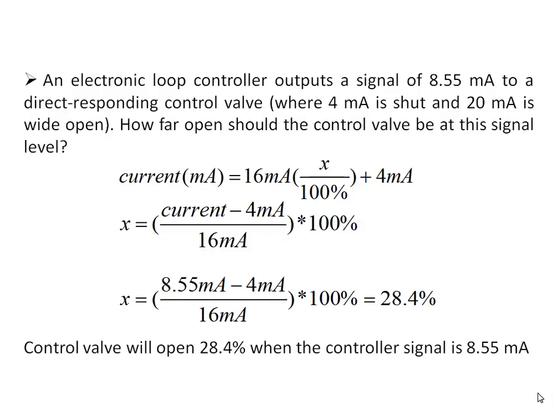Consider this example: an electronic loop controller outputs a signal of 8.55 mA to a direct-responding control valve, where 4 mA means the valve is completely shut and 20 mA means it is completely open. How far is the valve open for a signal of 8.55 mA? Using the equation — current = 16 mA × percentage variable + 4 mA — and substituting 8.55 mA, we get a manipulating variable of approximately 28.4%. So the control valve will open 28.4% when the controller outputs 8.55 mA.